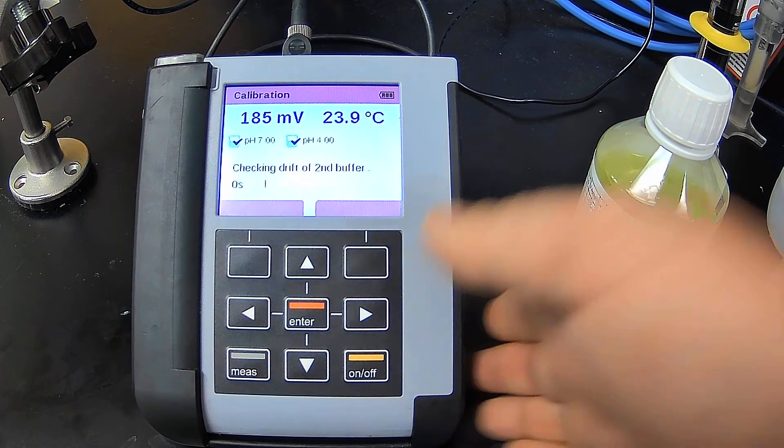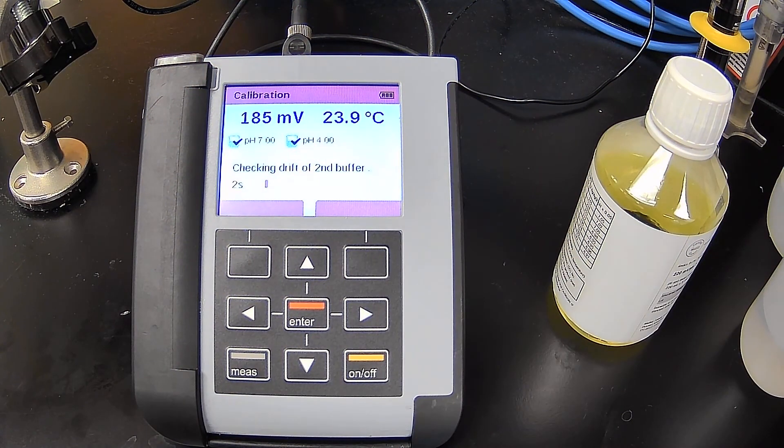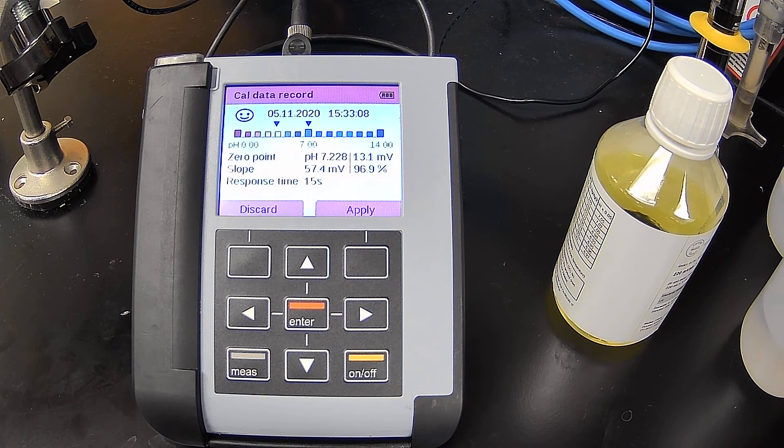So I hit continue. And it's going to start the second calibration for the second buffer, which is a buffer 4. So again, we've already calibrated the ORP.